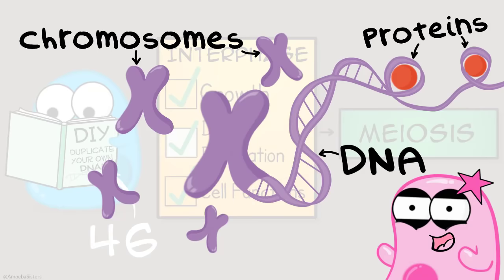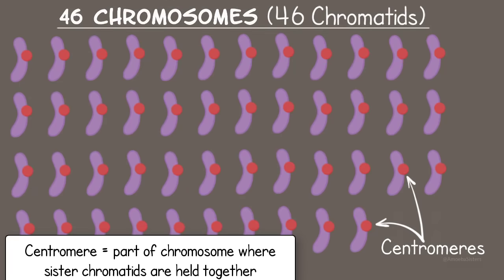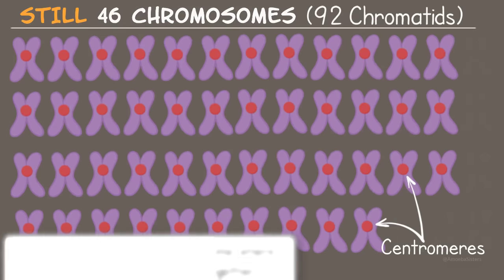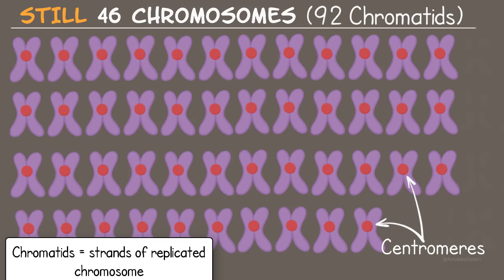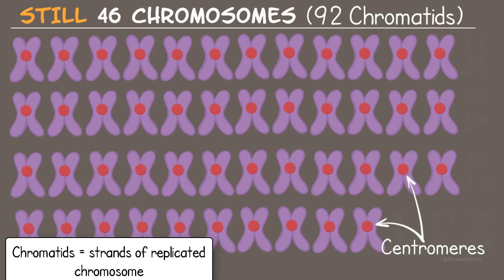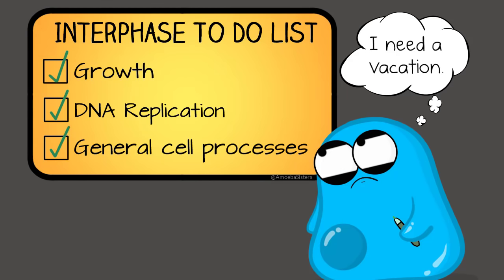Ready for the tricky part? Because we tend to count chromosomes by the number of centromeres present, when the 46 chromosomes duplicate, we still say there are 46 chromosomes because the sister chromatids are still attached and we are counting by centromeres. So 46 chromosomes replicate in interphase, and you still have 46 chromosomes — but you went from 46 to 92 chromatids. A little tricky. We have a detailed video explaining chromosome numbers before and after replicating in interphase. Interphase checklist done.